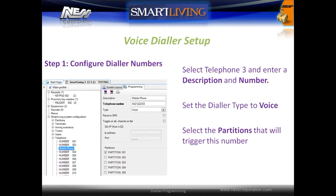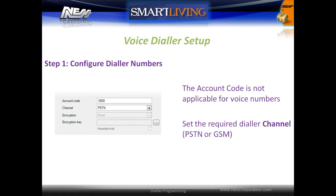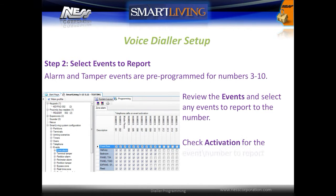To configure voice dialing, first select telephone number 3 and enter a description and a number. Set the dialer type to voice and then select the partitions that will trigger the number. Next, set the required dialer channel to report through. Zone alarms and tamper events are pre-programmed to report through to phone numbers 3 through 10. For additional reports, review the events and select any events to report to the numbers.